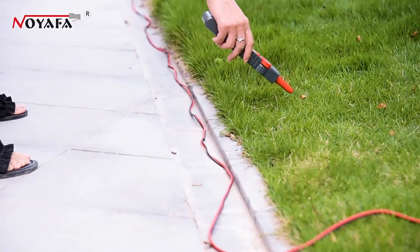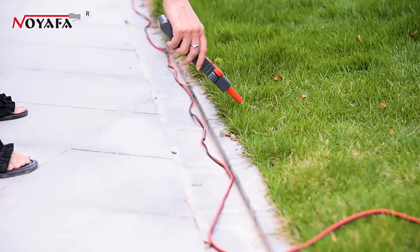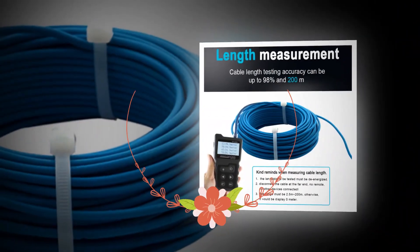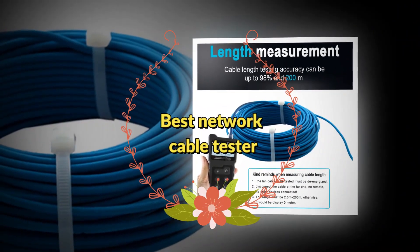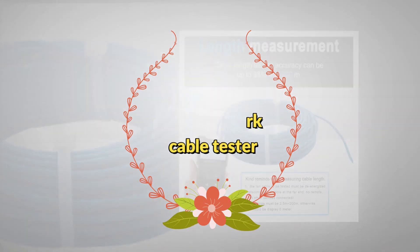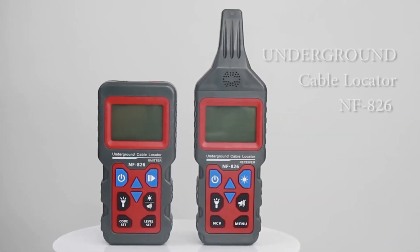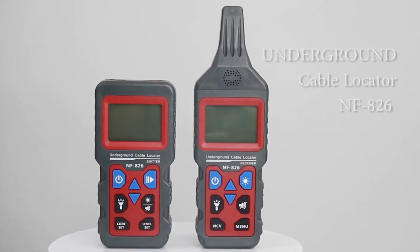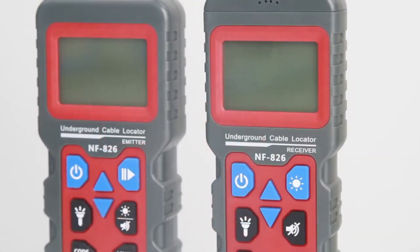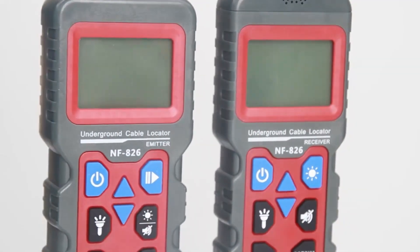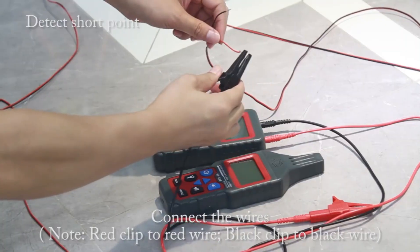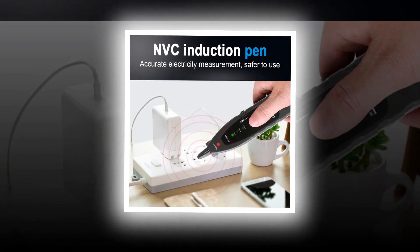Many testers offer compatibility with network protocol analyzers for deeper diagnosis of problems. Because different networks vary in specifications from country to country and even within a country, it is important to select a tester that has global coverage. Ethernet cable testers are a dime a dozen, but none of them are as elegant and multimeter-friendly as this tester from hackaday.io.